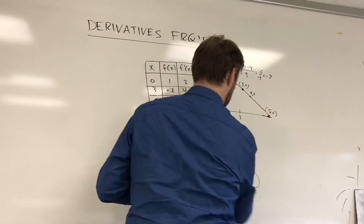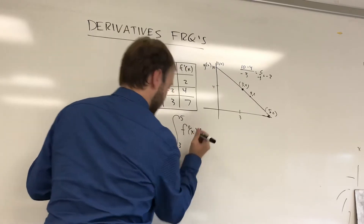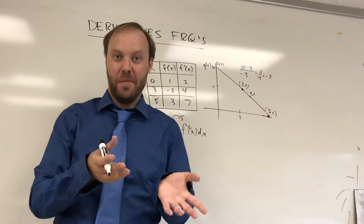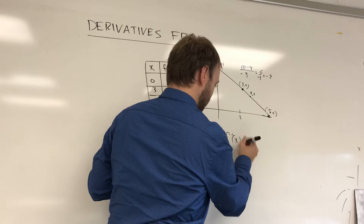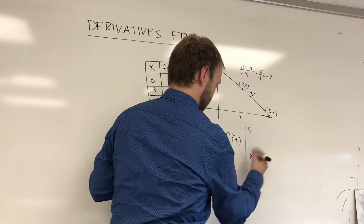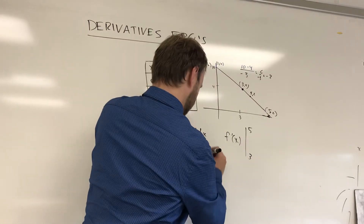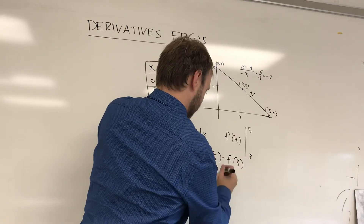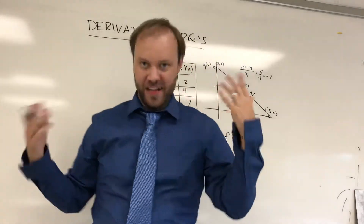They can do other variations. They could say find the integral from 3 to 5 of f double prime of x. What did they differentiate to get f double prime? They differentiated f prime. So the antiderivative is f prime, evaluated between 5 and 3. f prime of 5 is 7, f prime of 3 is 4, so 7 minus 4 equals 3.